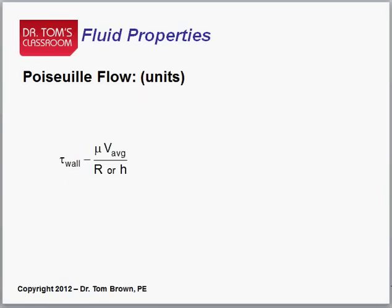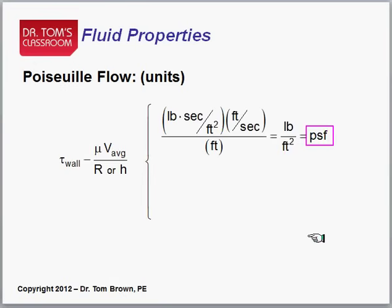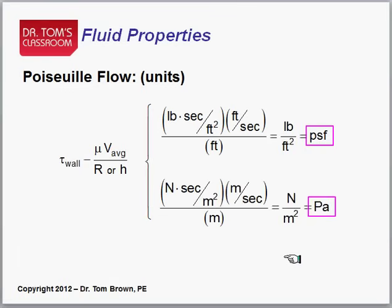Well, what about the units on that? You know me. Well, you have sort of a mu times an average times either an r or an h, and so in the U.S. system, pound second feet squared times feet per second divided by feet will give you pound per foot squared, PSF. That's good. And in the metric, newton second per meter squared times meters per second divided by meters is newton per meter squared pascal. So that's great. So all of that works out.